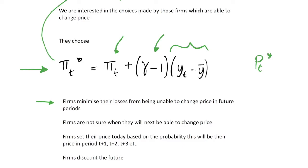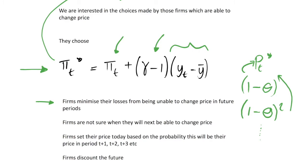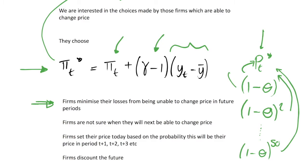This makes sense: if a firm can change its price today to pt star, what actually is pt star? In period t plus 1 there's a 1 minus theta chance they'll be stuck with pt star; in period t plus 2 there's a 1 minus theta squared chance they're still stuck with this price level, and this goes off to infinity with declining probability. If they're choosing the optimum price level, they'll take this probability into account. So pt star is not just the optimum price for this period — they're minimising losses for all future periods, discounting by the probability of still being stuck with this price.